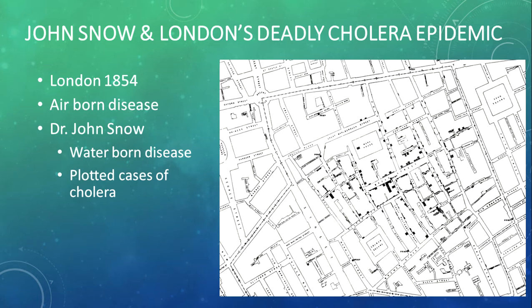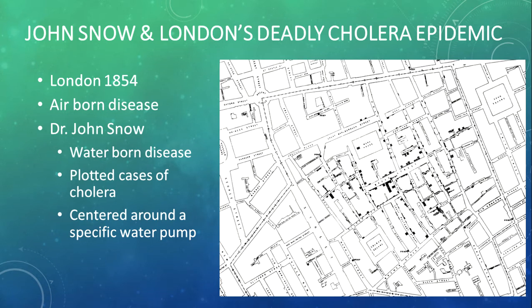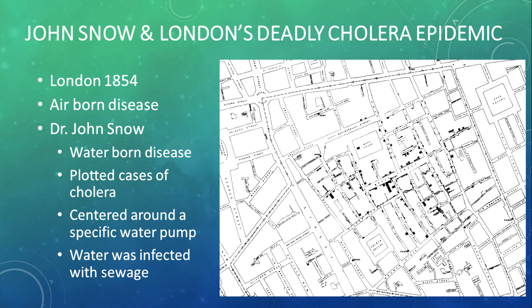This was 1854. At the time, they thought cholera was an airborne disease and so many people were dying of it — they just didn't know what to do. However, one doctor felt there had to be another reason. He started plotting out all the deaths from cholera in the Soho district of London and noticed a trend: all of these deaths seemed to be centered around a very specific water pump. When he examined it further, he found that the water pump was infected with sewage. Once they cleaned it out and got clean water flowing again, the cholera epidemic started to decline. He realized that cholera was more of a waterborne disease than an airborne disease.